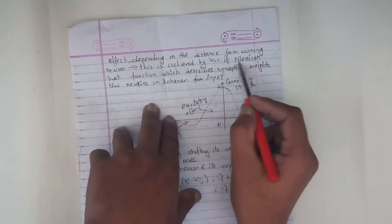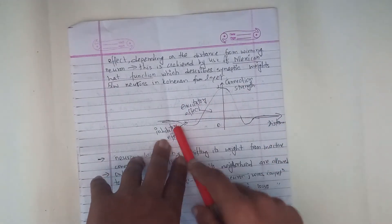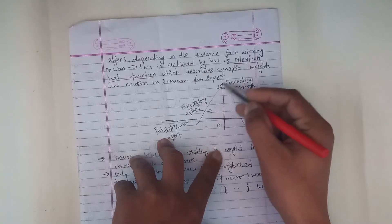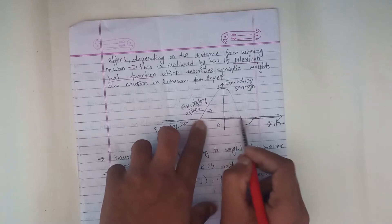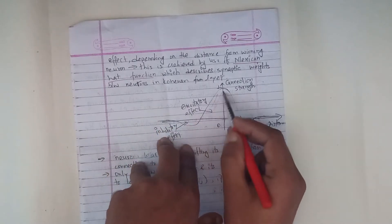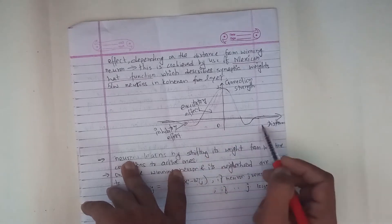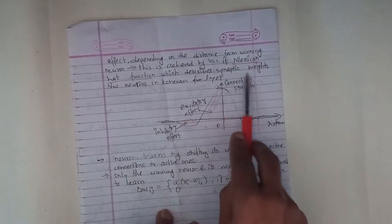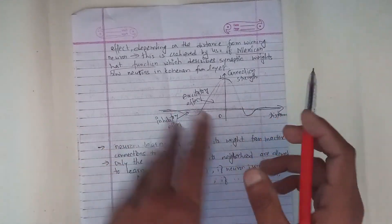This is achieved by using the Mexican hat function. The Mexican hat function describes the connection between the winning neuron and others — producing an excitatory effect for nearby neurons. It describes synaptic weights between neurons in the Kohonen layer. A maximum height function describes synaptic weights between neurons.